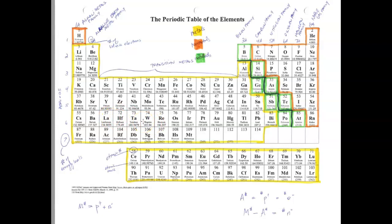Metals have characteristics of being shiny and lustrous, they can conduct heat and electricity, and they're generally solids. Non-metals have the opposite characteristics: they're poor conductors of heat, they're brittle, and they generally have low melting points. On some periodic tables the element symbols are color-coded — black for solids, blue for liquids, and red for gases.